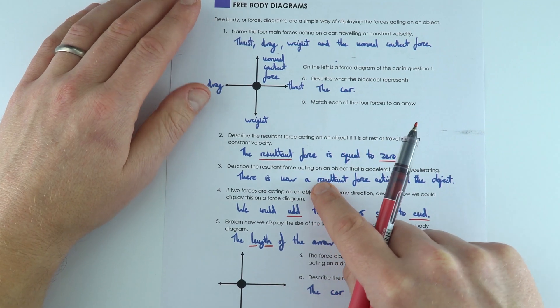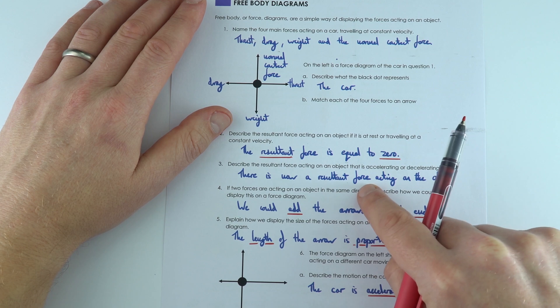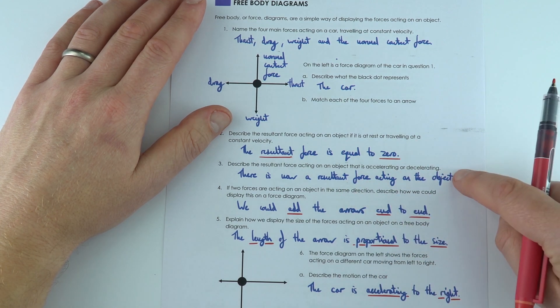But if you've got something which is speeding up, slowing down, or changing direction, that's caused by a resultant force or a net force acting on the object.